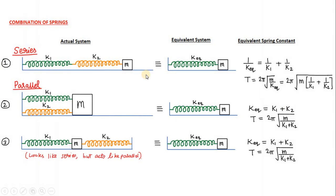Here is the summary of all the three things that we studied just now. The actual system is given by these three figures. We can replace all of these with only one spring and one mass. The equivalent spring constant: in case of series combination, 1 by k equivalent is equal to 1 by k1 plus 1 by k2; in parallel combination, k equivalent is k1 plus k2; and for the type where the block is in the middle and springs are on either side, k equivalent is also k1 plus k2.